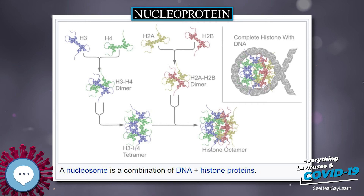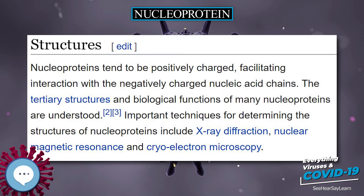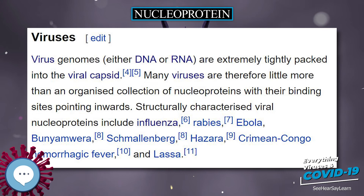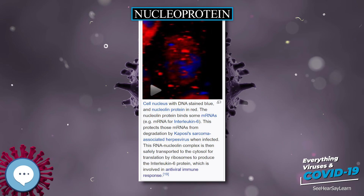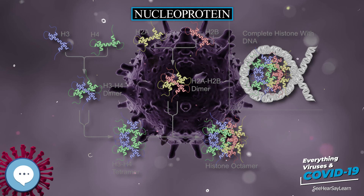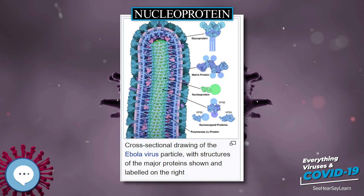RNP can also refer to ribonucleoprotein particles. Ribonucleoprotein particles are distinct intracellular foci for post-transcriptional regulation. These particles play an important role in influenza A virus replication. The influenza viral genome is composed of ribonucleoprotein particles formed by a complex of negative sense RNA bound to a viral nucleoprotein. Each RNP carries with it an RNA polymerase complex. When the nucleoprotein binds to the viral RNA, it is able to expose the nucleotide bases which allow the viral polymerase to transcribe RNA. Once the virus enters a host cell it will be prepared to begin the process of replication.